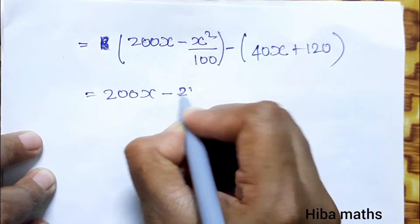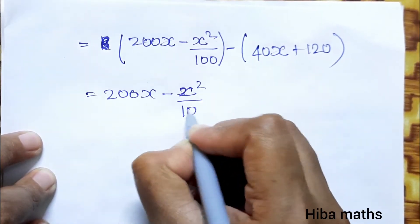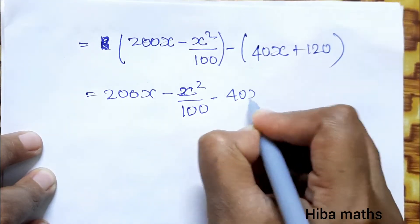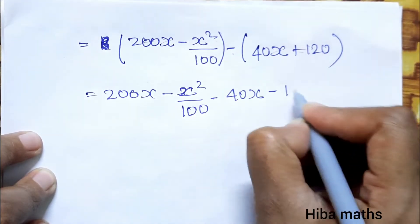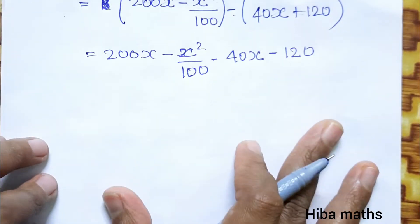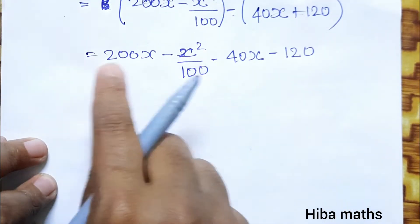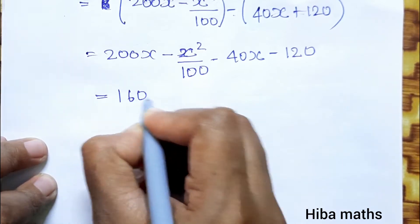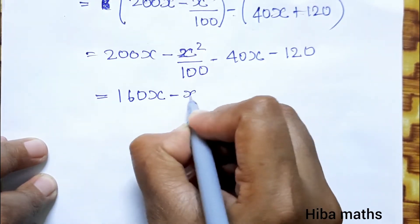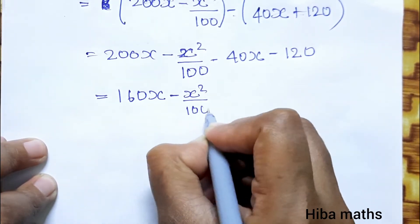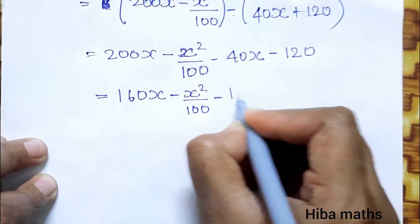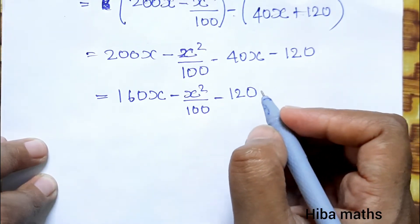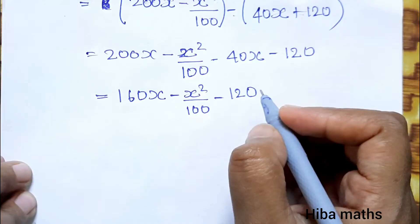Profit = 200x - x²/100 - (40x + 120) = 200x - x²/100 - 40x - 120 = 160x - x²/100 - 120. This is the profit function.